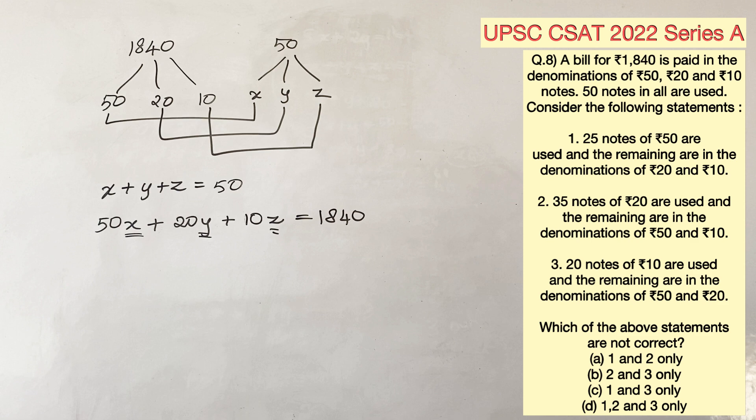For example, you have 10 rupee notes, and you have 4 of them. If you multiply 4 and 10, you'll get the total amount that you have with you, which is 40 rupees. That's the logic we have followed here.